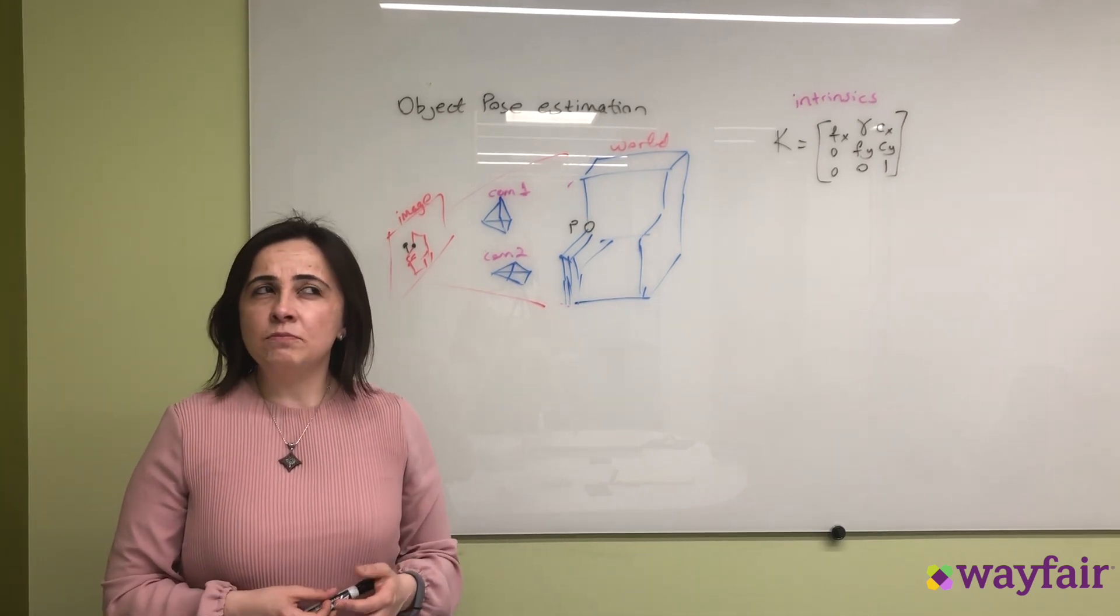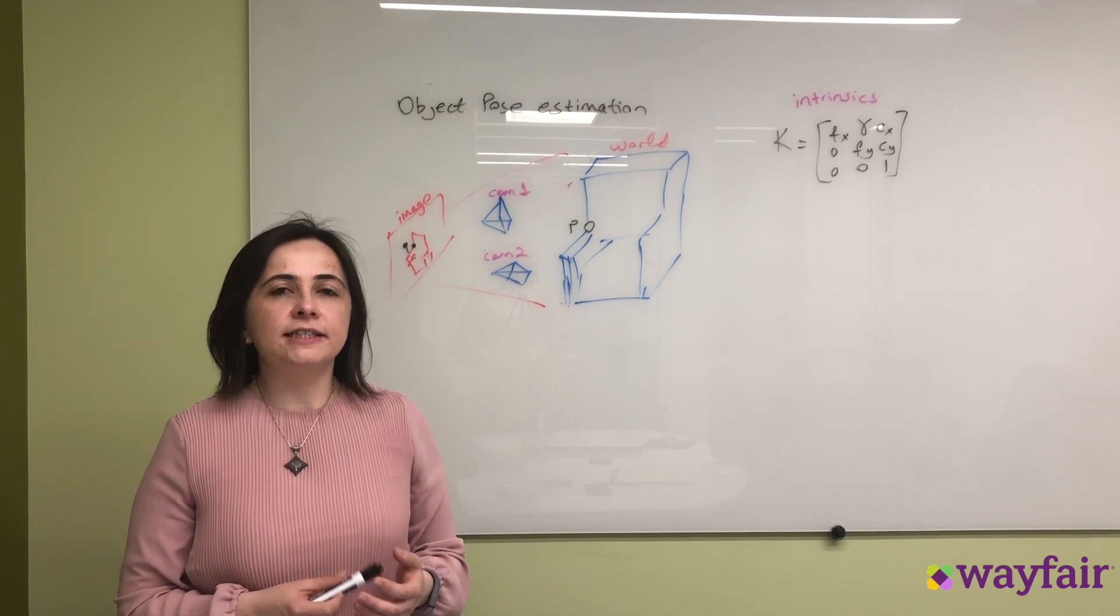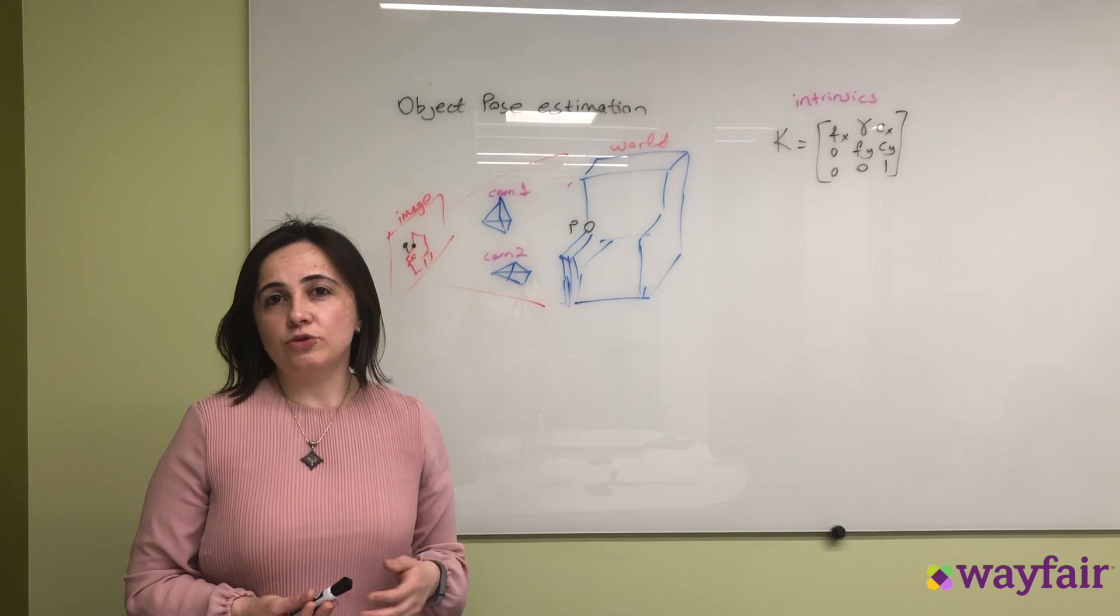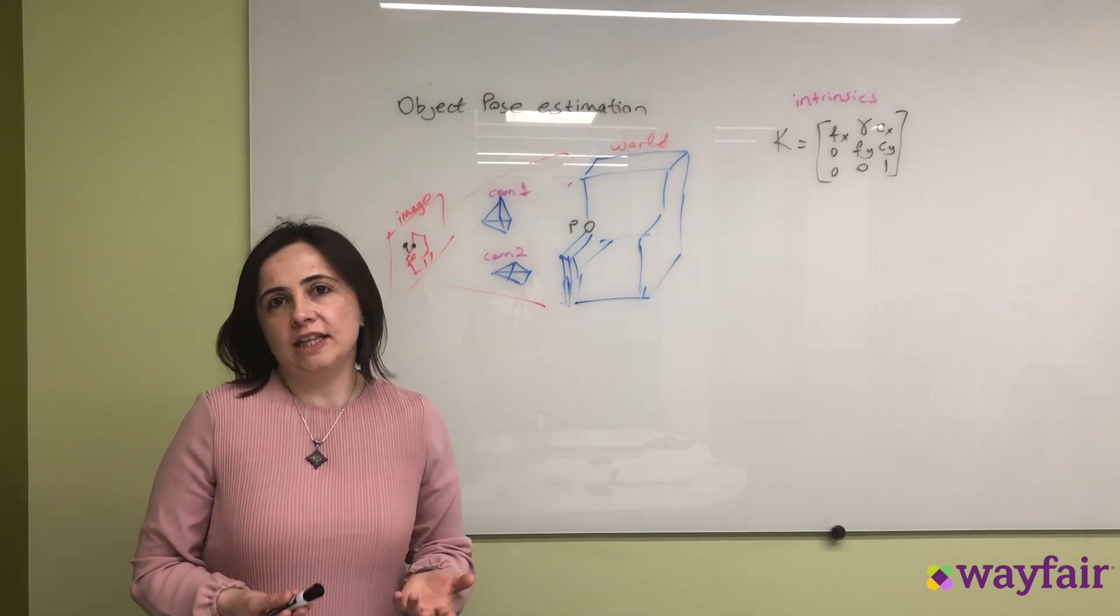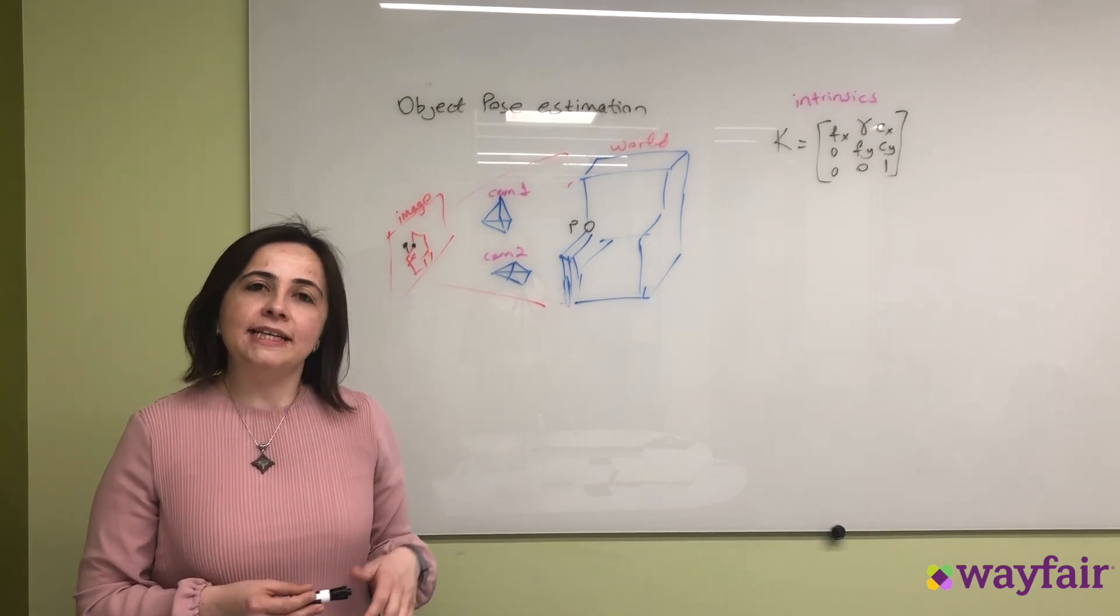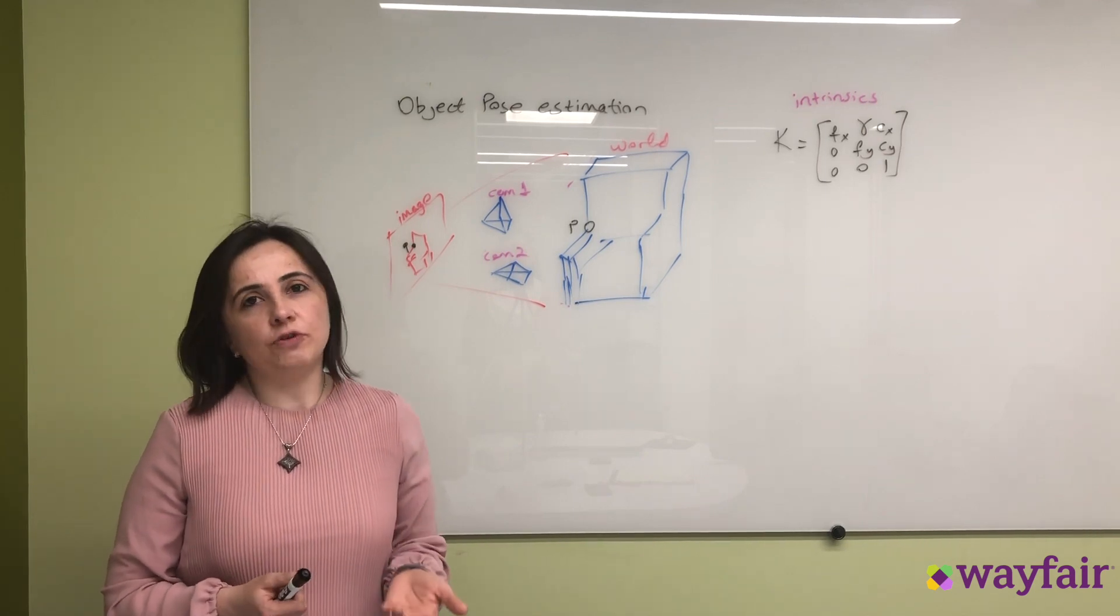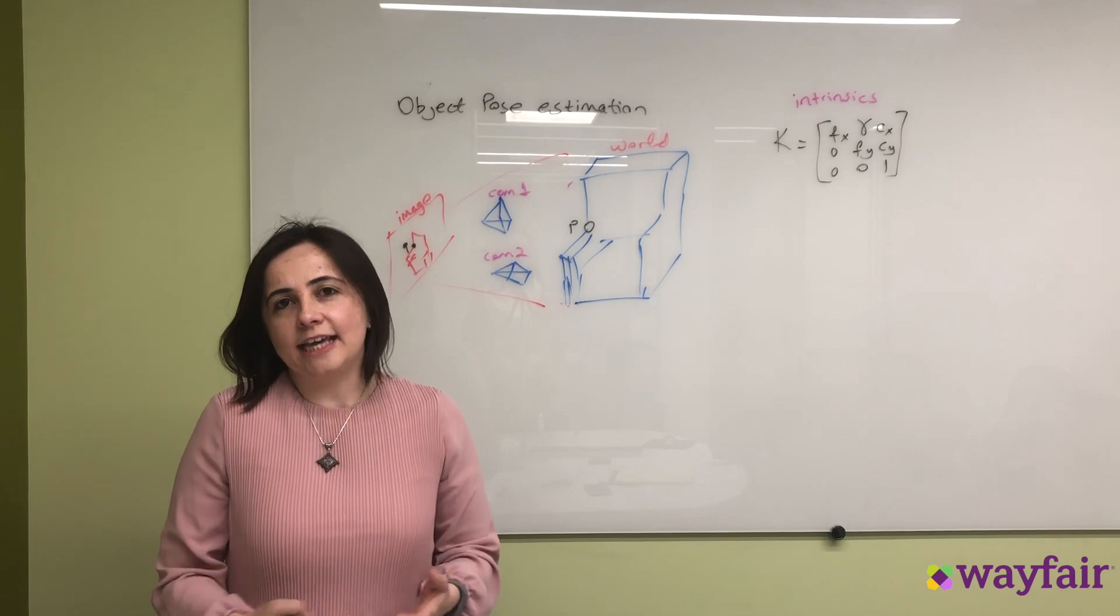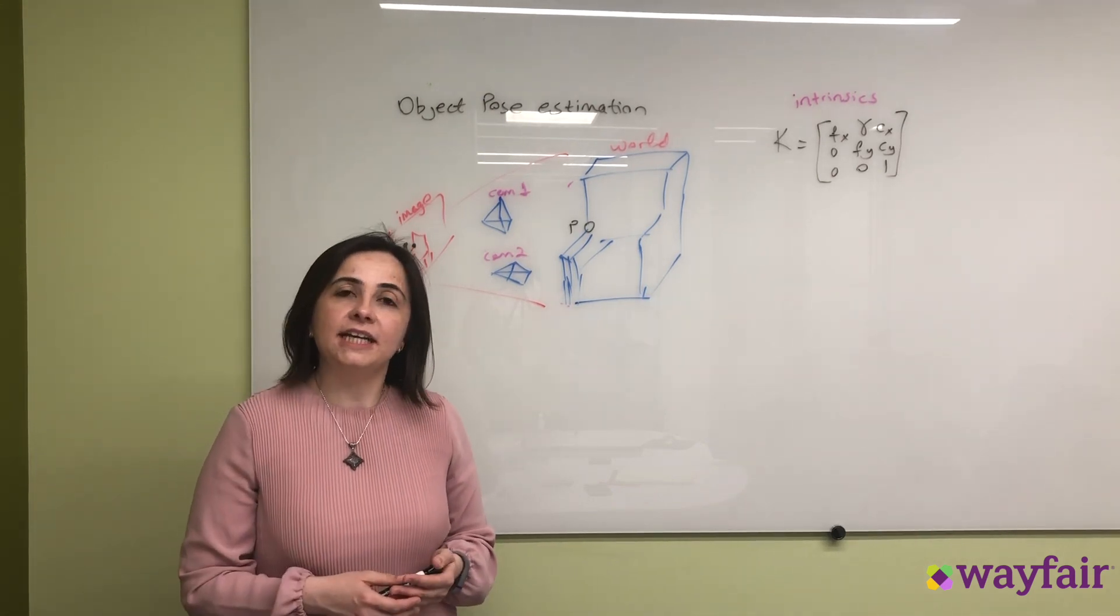This problem appears mostly in robotics and augmented reality domains. If you have a mobile robot and you want your robot to grab an object and pick it up, you need to localize that object. As the camera pose or location of your mobile robot changes, you have to localize the object again and again so that you can accurately pick it up.